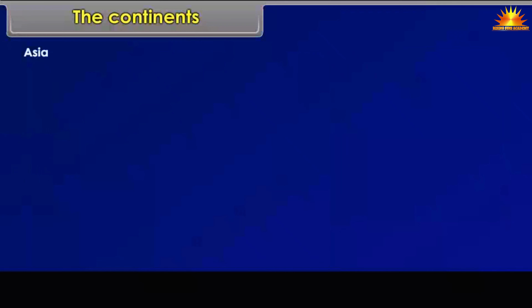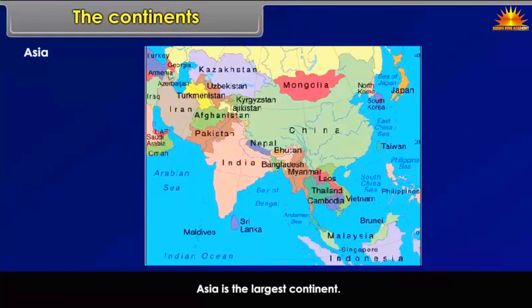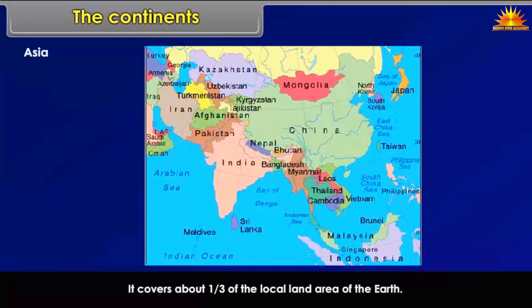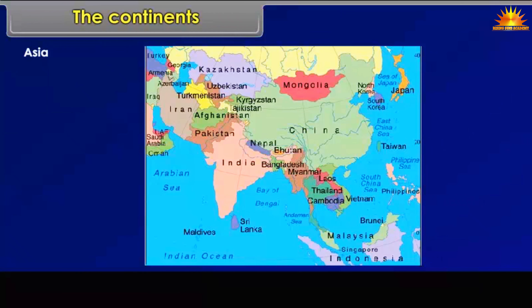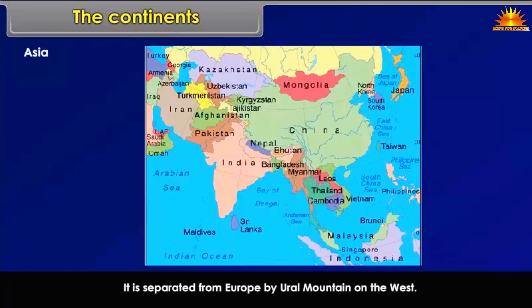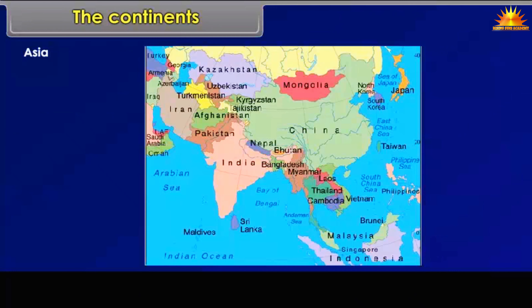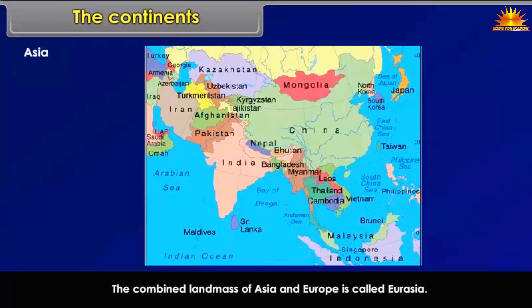Asia is the largest continent. It covers about one-third of the total land area of the Earth. Asia lies in the Eastern Hemisphere and is separated from Europe by the Ural Mountains on the west. The combined land mass of Asia and Europe is called Eurasia.